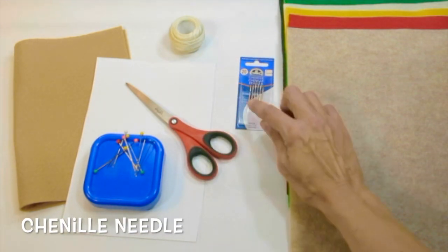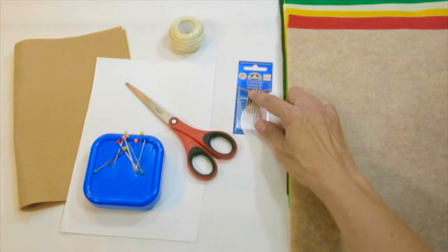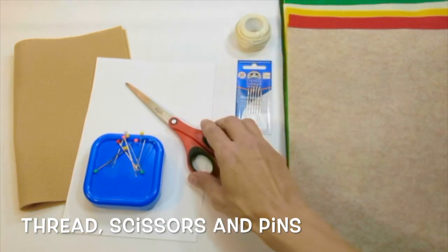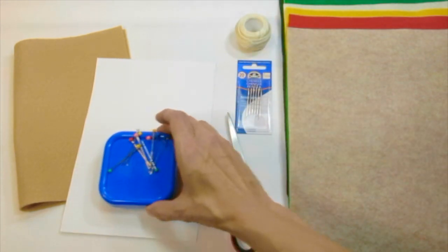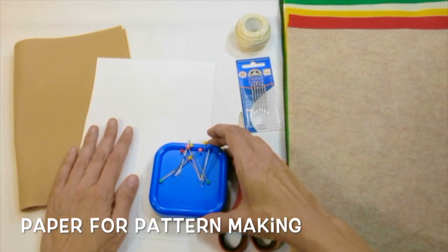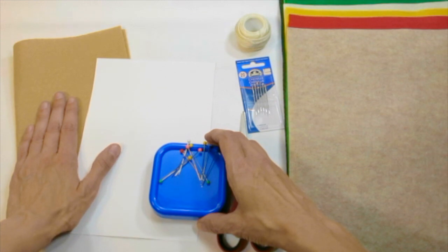You'll want a needle that's sharp on one end, but big enough at the eye or the opening for you to get your thread through. That means you'll also need thread. Scissors, pins would be really helpful, but you don't have to have them. Paper for making a pattern. And of course, more felt. So let's get started.